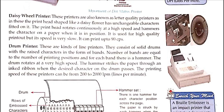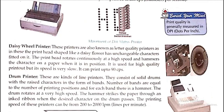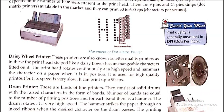The daisy wheel printer is the second type of character printer. The difference is that the head is shaped like a daisy flower, with unchangeable characters fitted on it — the characters' positions cannot be replaced. The print head rotates continuously at high speed, and a hammer strikes the character on the paper when it is in position. It is used for high quality printout, but its speed is very slow — it can print up to 90 CPS.